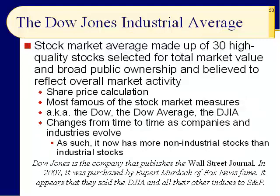Slide 50. Here it is — the granddaddy of them all. 1896. Charles Dow of Dow Jones — that's the name of the company that owns the Wall Street Journal, which was bought by Rupert Murdoch. It seems that now Standard & Poor's is actually running the Dow Jones Industrial Average. The DJIA is the most popular and most widely reported index, and it is one of the worst averages. Why? Because it's only 30 companies. It started out as 12, and one of them is still in the index.